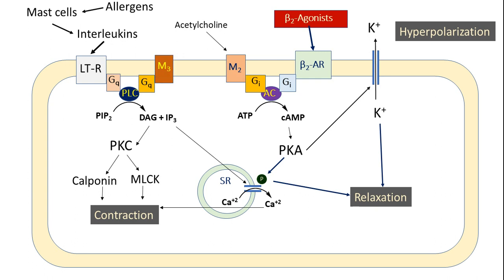The muscarinic M3 receptor mechanism on smooth muscle is also the same — this sequence ensures contraction of the smooth muscle. Beta-2 agonists help achieve smooth muscle relaxation by activating the beta-2 adrenergic receptor and enhancing cyclic AMP levels.